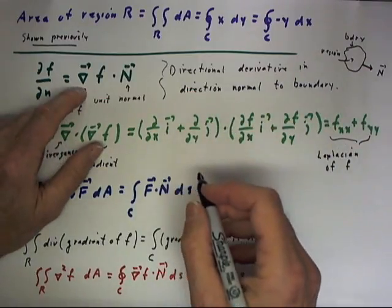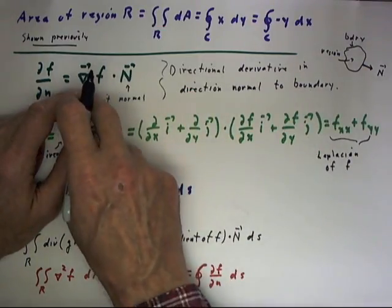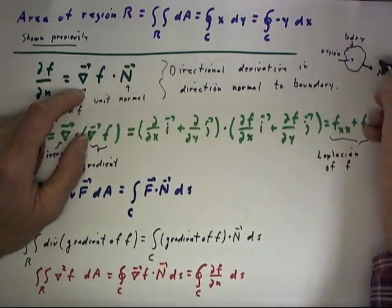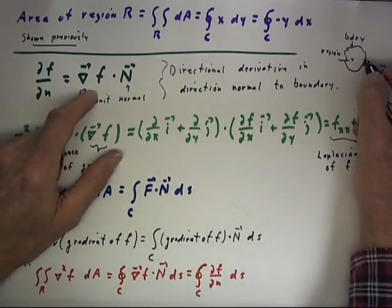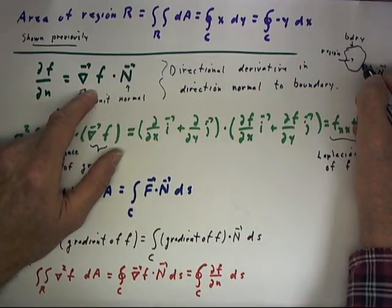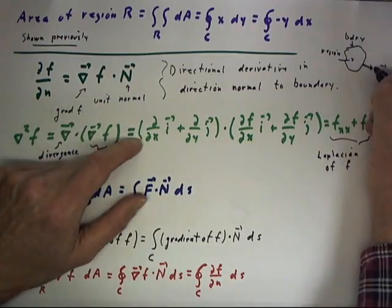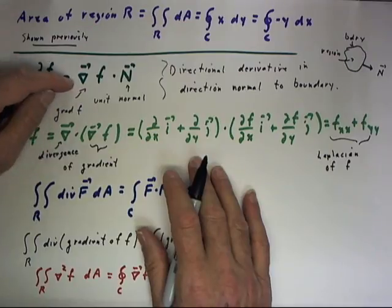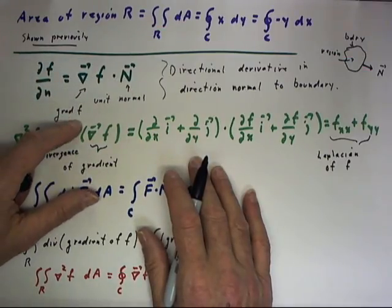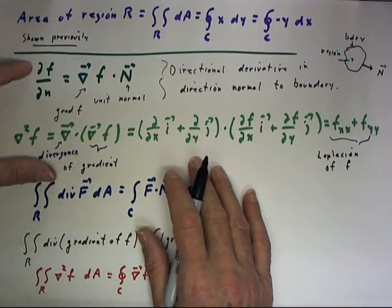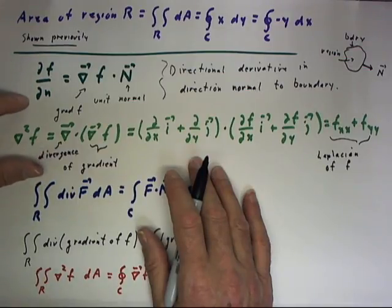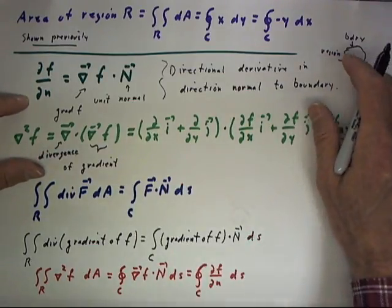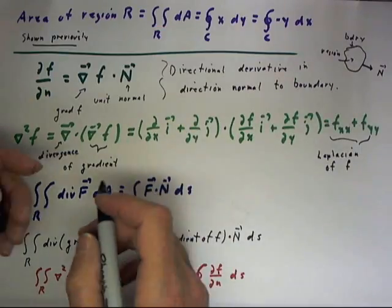We have our function f, so that del f dot n is the dot product of the gradient of this scalar function with the outward normal. So gradient of f dot n is the normal derivative of our scalar function relative to some boundary in some region.